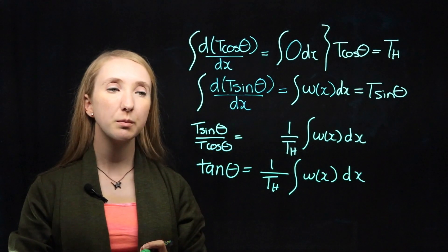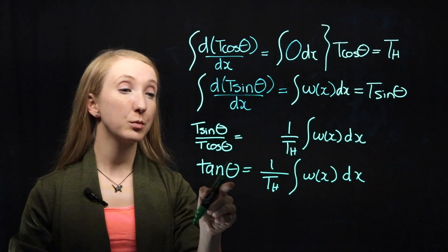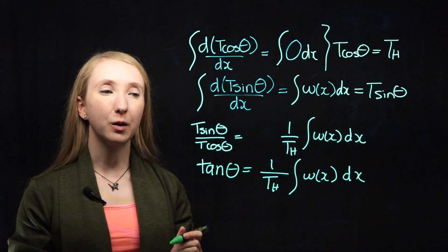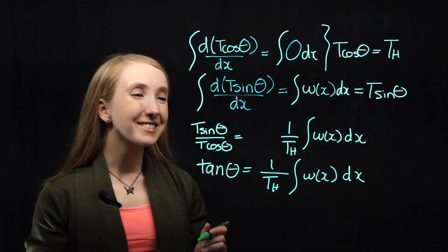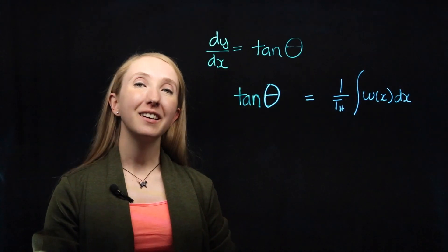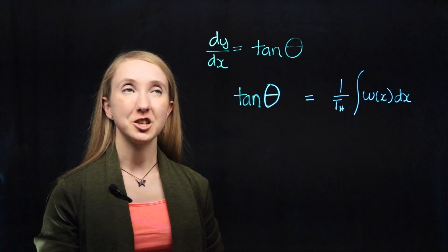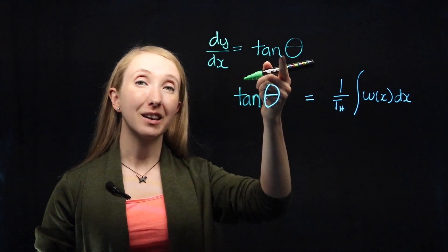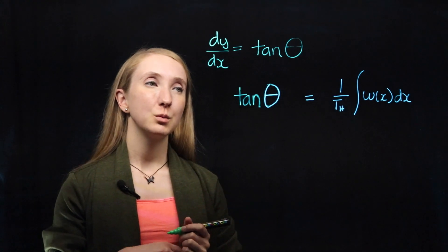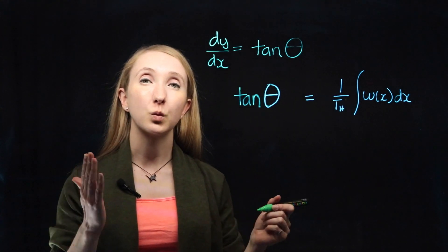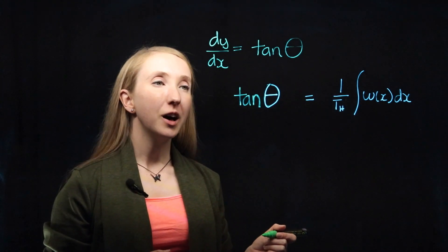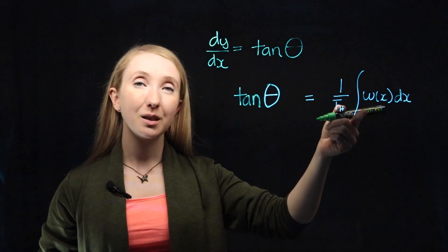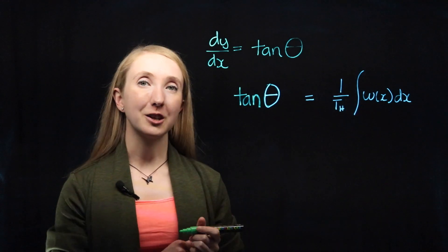And remember that sine theta over cos theta is equal to tan theta. Now, do you remember seeing this tan theta somewhere else? Like in our equilibrium about our moment? From simplifying our moment equilibrium equation, we got that DY over DX is equal to tan theta. And from working with our X and Y equilibrium, we got that tan theta is also equal to 1 over TH times the integral of our loading function.